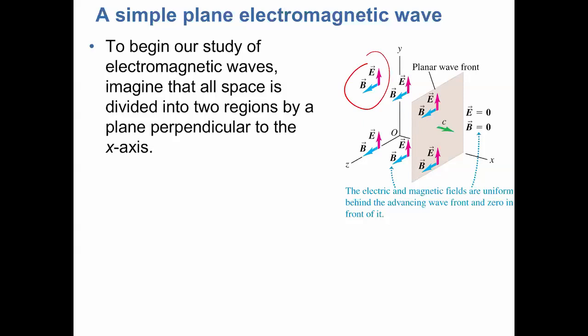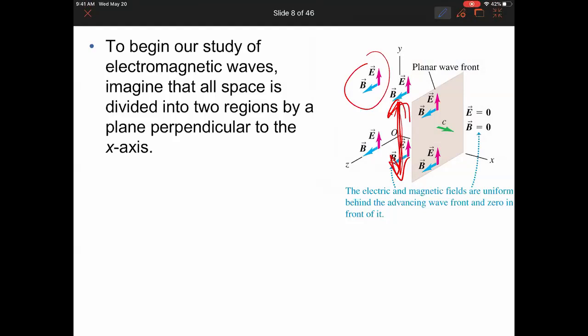You have constantly changing electric and magnetic fields that reinforce each other, and the wave propagates in the positive x direction. The electric field oscillates up and down in the y direction, and the magnetic field oscillates in the z direction. As they oscillate, the system moves in the x direction. They are sinusoidal wave-like, making the wave propagate along the x direction.